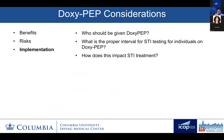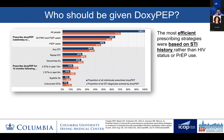So we know that DOXYPEP works, we understand the risks—next up is implementation. Implementation that focuses on maximizing the benefits while minimizing the risk and ensuring equity for the most vulnerable populations. This includes questions like who should be given DOXYPEP, what is the proper interval for STI testing for individuals on DOXYPEP, and how does this impact STI treatment? When thinking about who should we be giving DOXYPEP to, there are both benefits and risks as well as a lot of unknowns. We want to figure out the optimal population that reduces STIs while minimizing antibiotic usage.